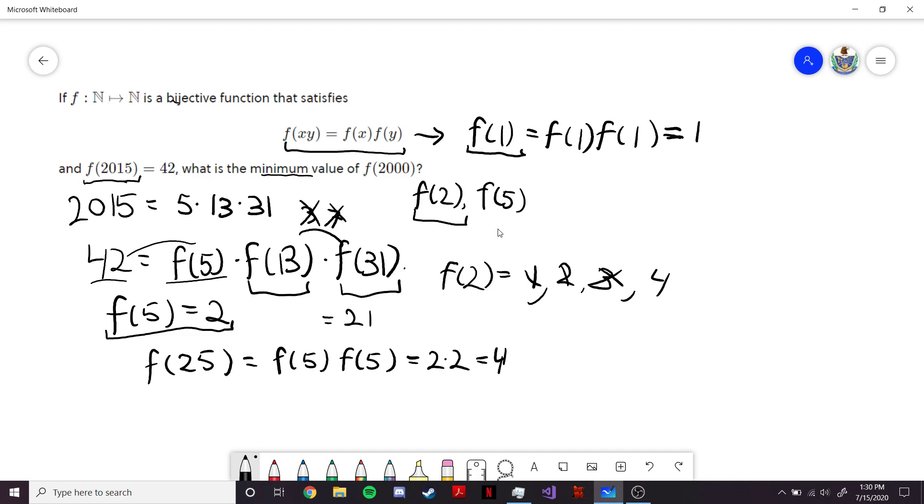So, since this is bijective, that means f(2) can't be equal to 4. And the next smallest option would be 5. So, f(2) is equal to 5.